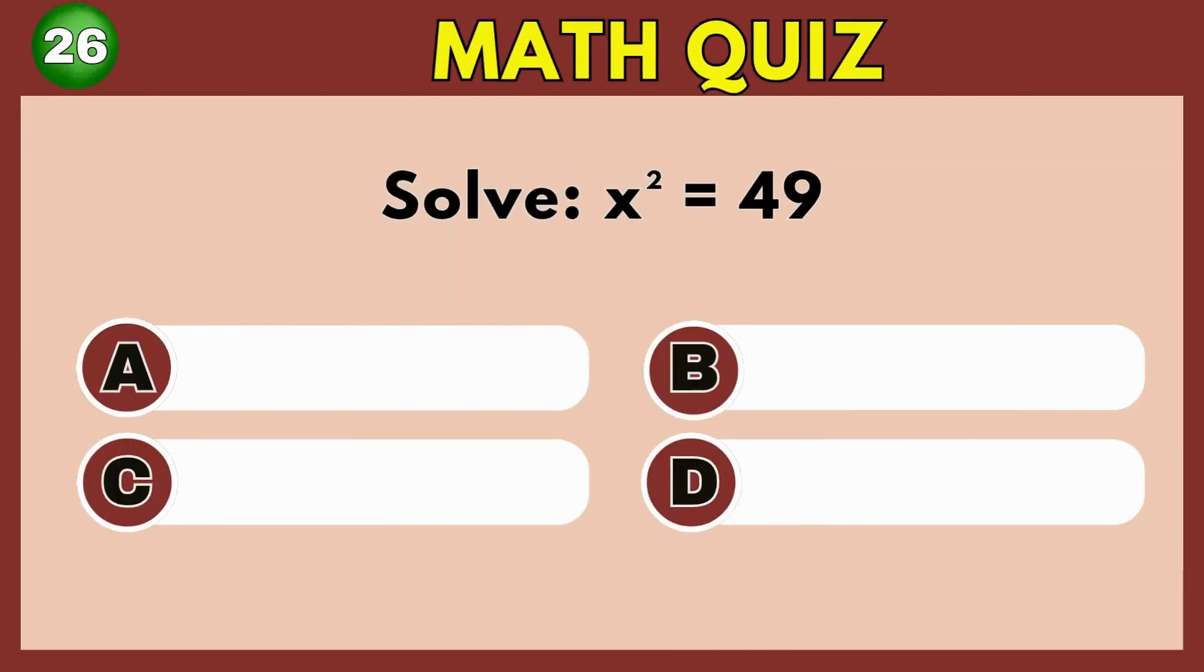If X squared equals 49, what is X? Option B. 7.